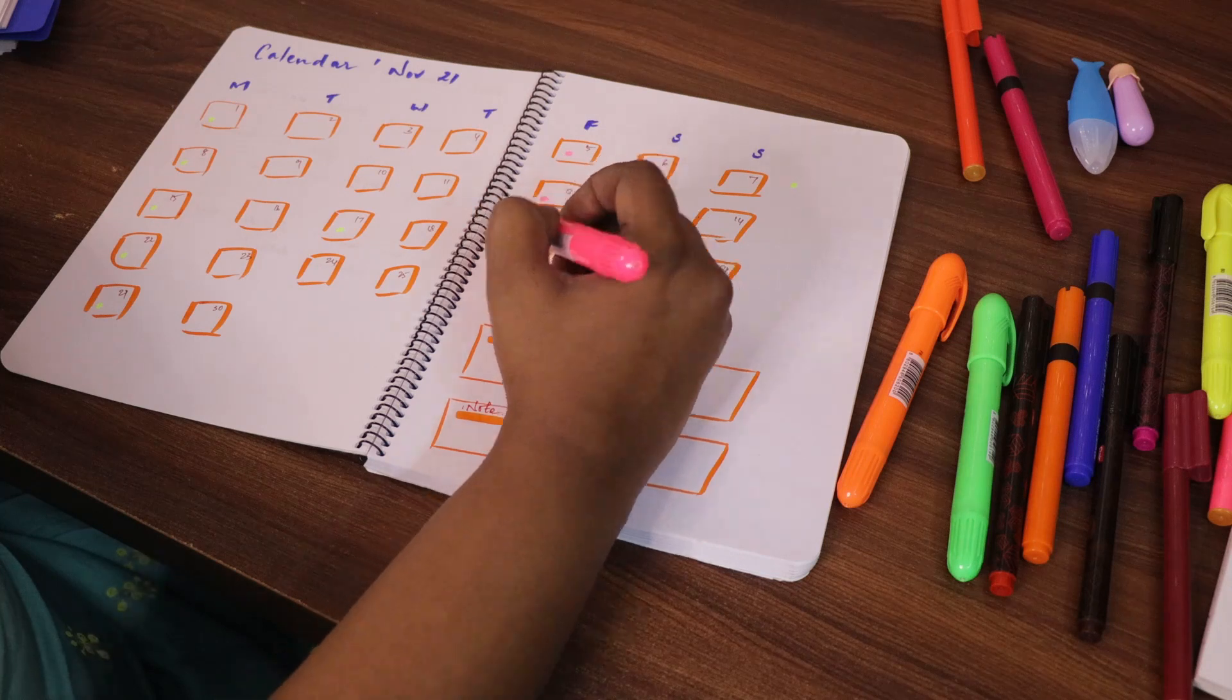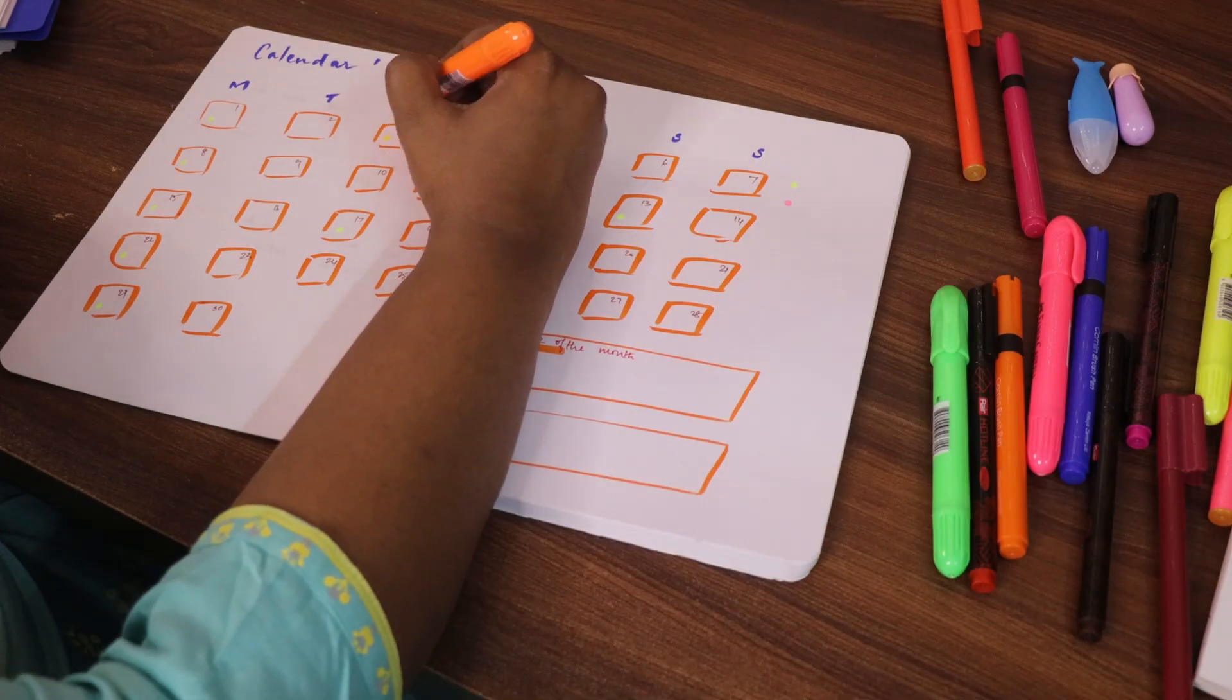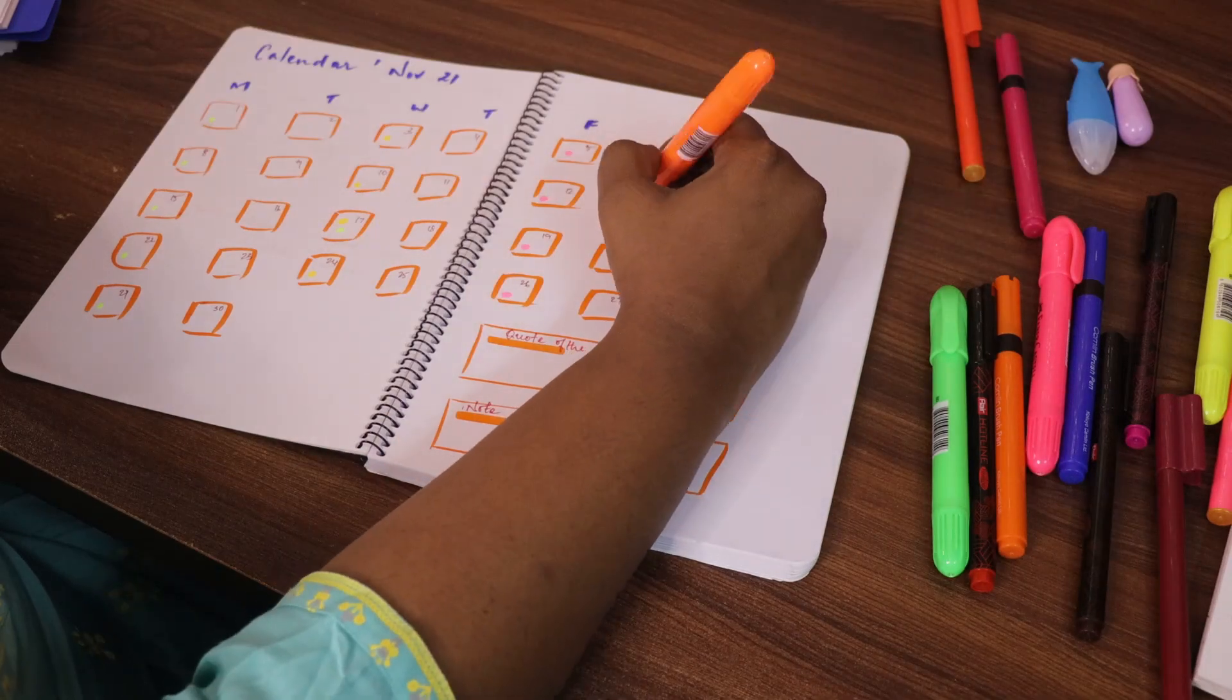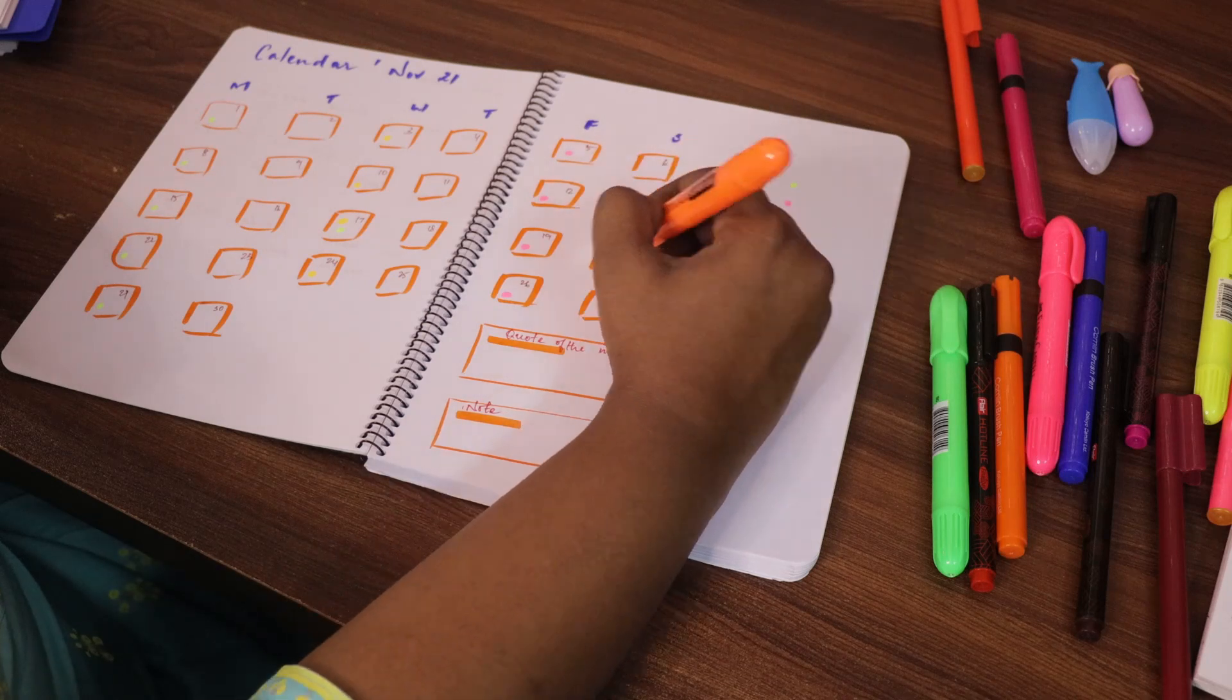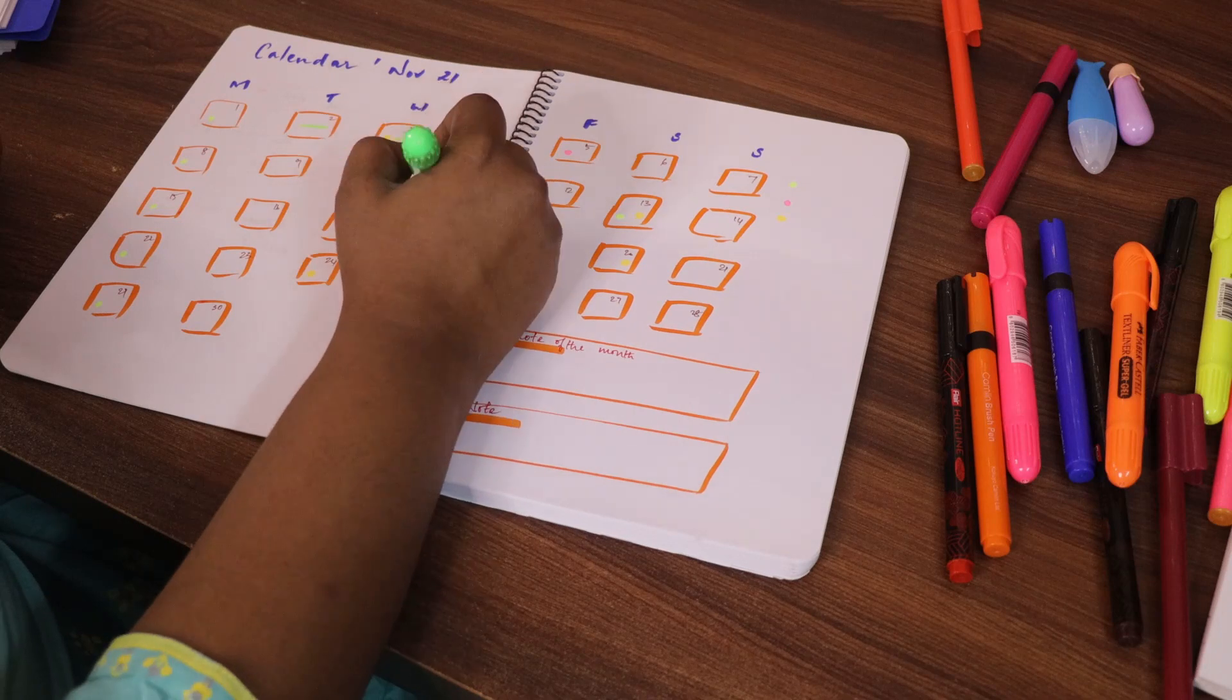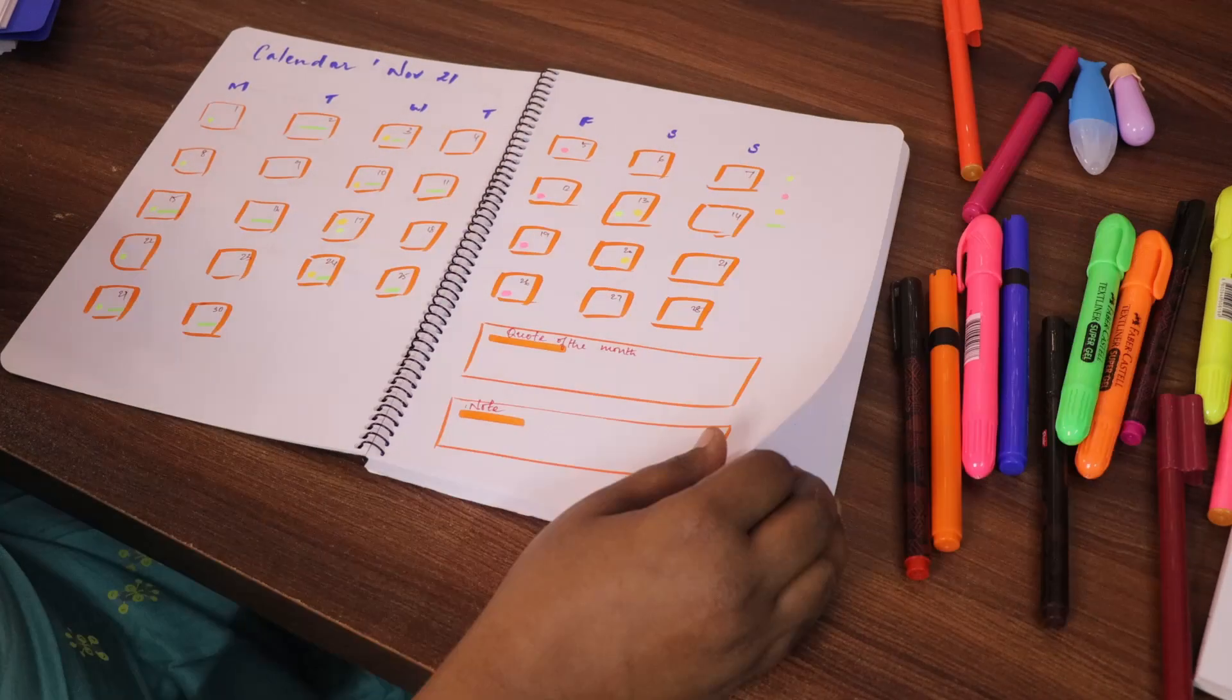Now I use different color markers to highlight different meetings or different things I plan to do on those days. I place a dot using that color marker and write them on a separate part of the page so I can actually write down what that color implies.